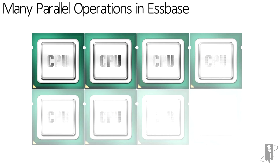Back in olden timey days, servers only had one CPU, so most things were done in serial, meaning one activity at a time. Most computers now, even things like laptops, will have more than one core, more than one CPU, and in some cases multiple CPUs with multiple cores on them, so we can launch lots and lots of simultaneous activities.